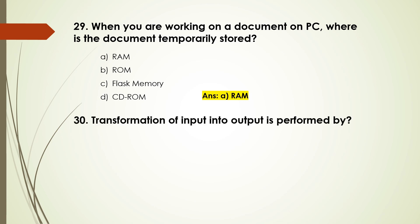Question number 30: Transformation of input into output is performed by — options are: memory storage, input/output unit, CPU. The answer is D, CPU.